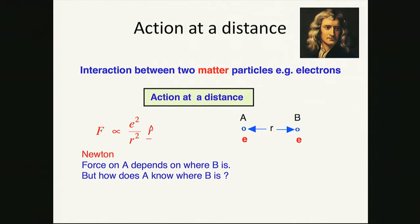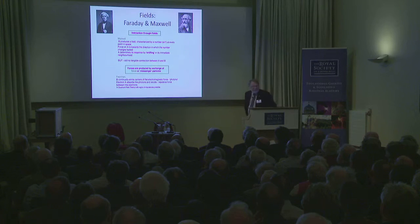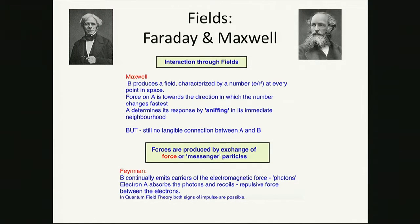Basically it is action at a distance. The force on A depends on where B is, but how do you know where B is? It's really the idea of fields. We've heard already that Faraday and Maxwell started to introduce these. Faraday was very much a practical sort of person; Maxwell very much the sort of person who could put it onto a firm quantitative mathematical definition. Maxwell introduced the idea of a field that permeates space. The force on A is toward the direction in which the field changes fastest. There's still no tangible connection between A and B — that came later with Feynman and others using Dirac's idea of quanta of photons.